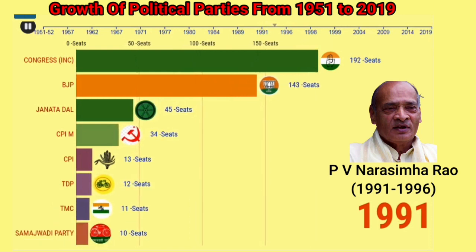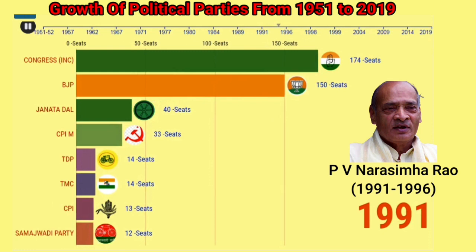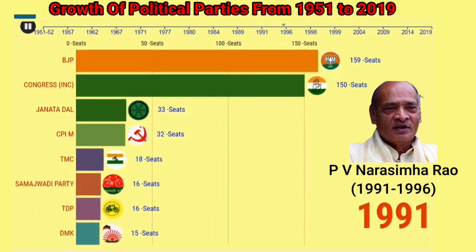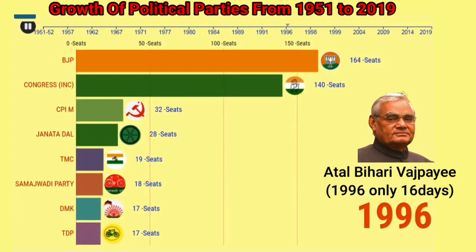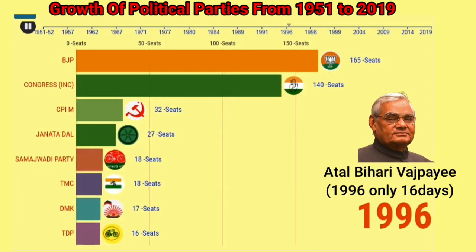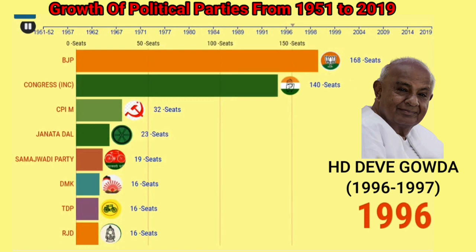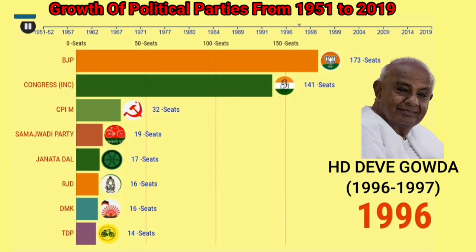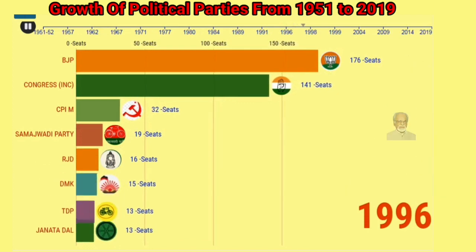Atal Bihari Vajpayee became the Prime Minister of India from the BJP party in 1996. Due to lack of confidence motion in Lok Sabha, his government collapsed. Later on, H.D. Deve Gowda became the Prime Minister of India from 1996 to 1997 from Janata Dal.